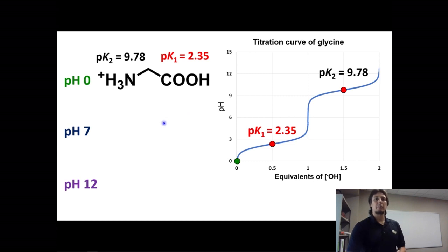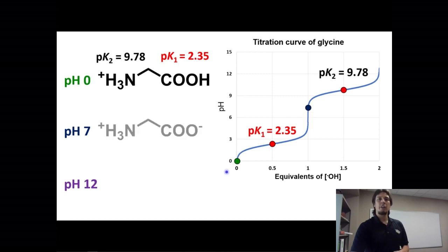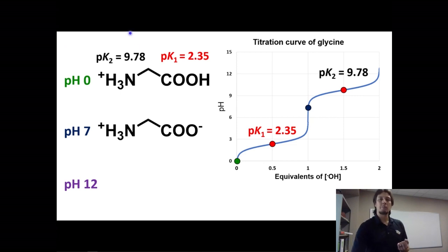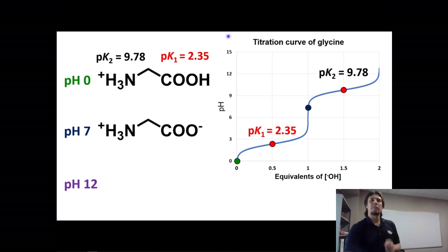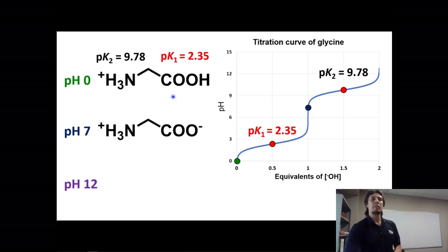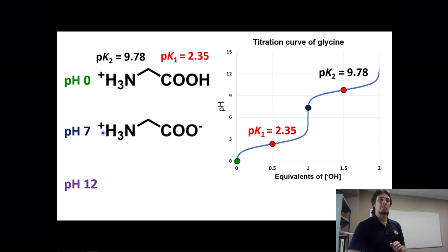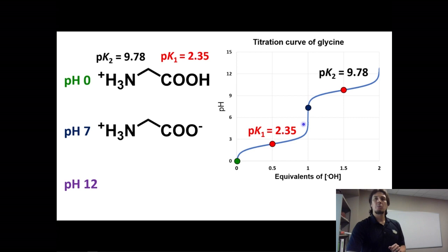If we change the pH to pH 7 and move our dot to pH 7 on the titration curve, it has passed through the first pKa — pK1 at 2.35 — which is for the carboxylic acid. So in traversing this, you go from a protonated carboxylic acid to a deprotonated carboxylate. Most glycine molecules at pH 7 will have a protonated amine (NH3+, keeping its positive charge) and a carboxylate with a negative charge.